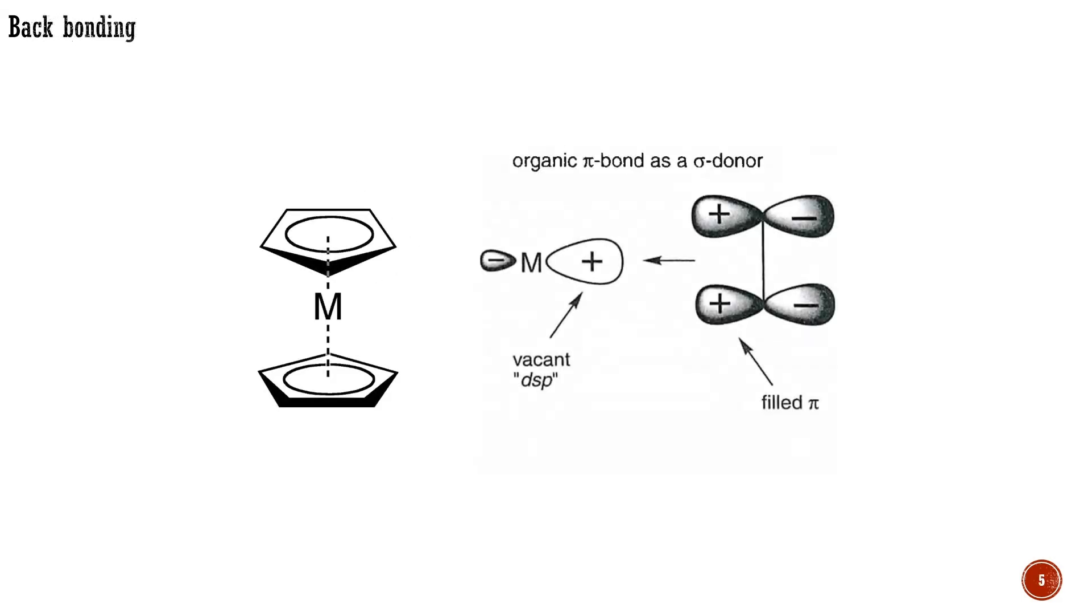Unsaturated organic ligands, such as alkenes, alkynes, arenes, carbon monoxide, and isonitriles, which have π-antibonding orbitals, bond somewhat differently.